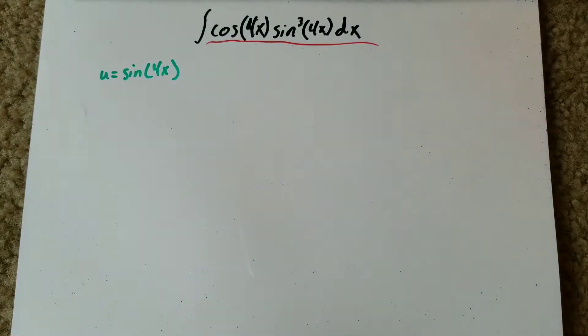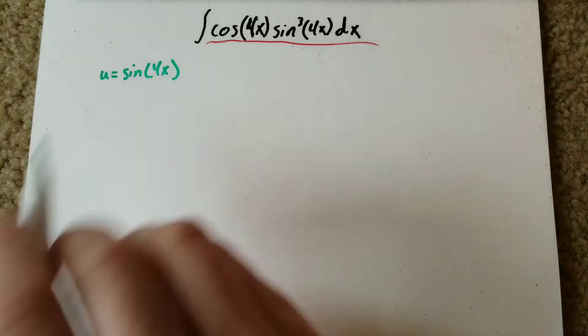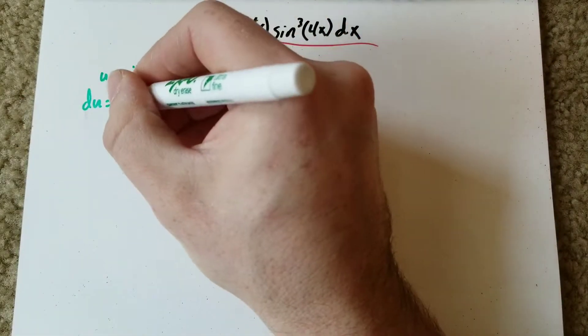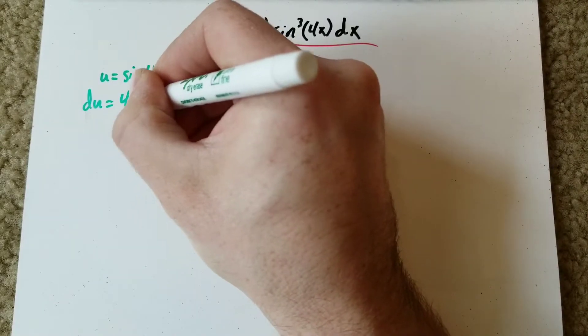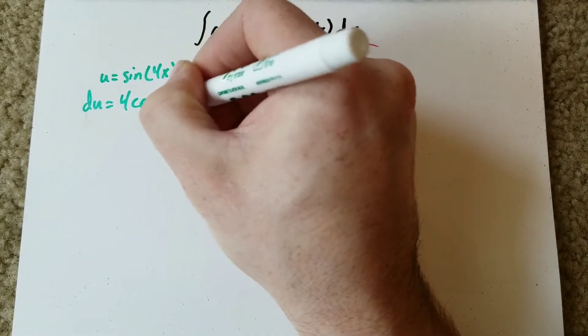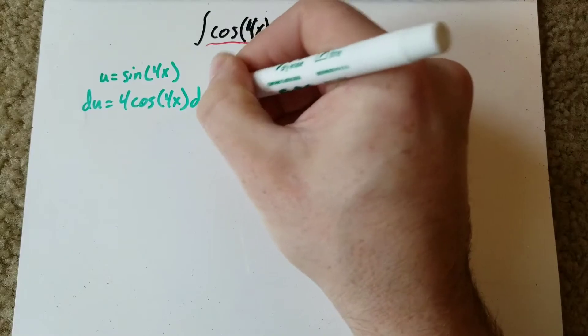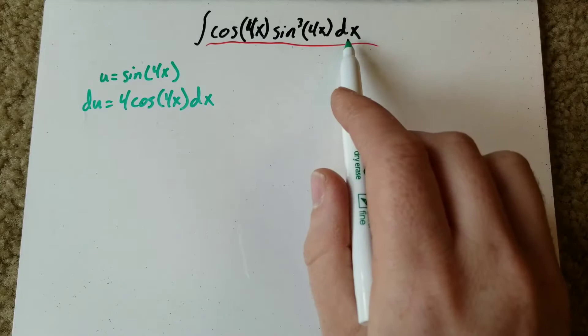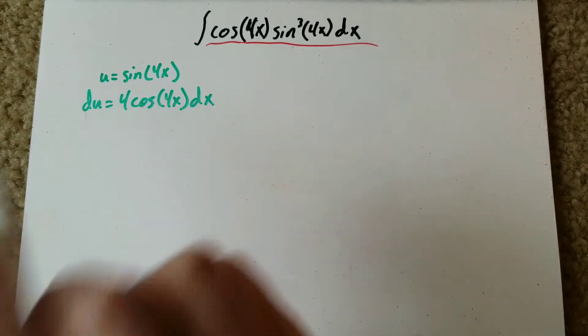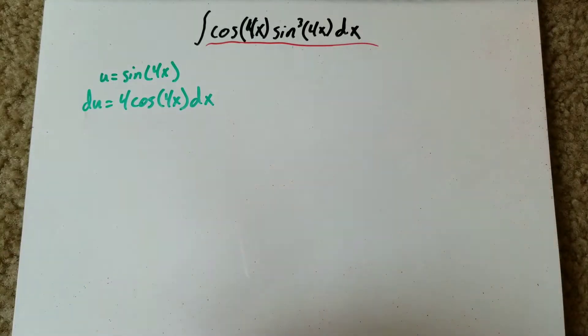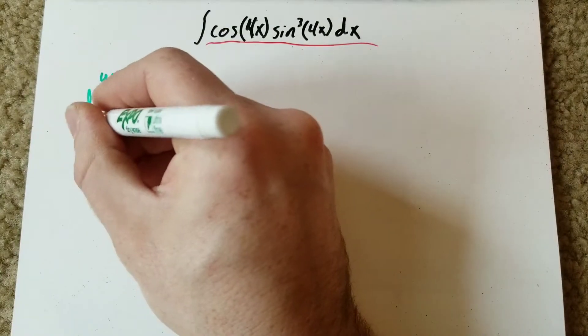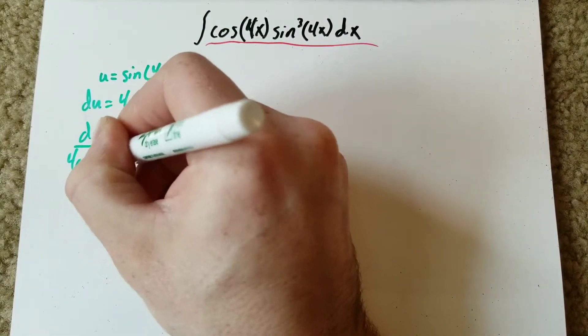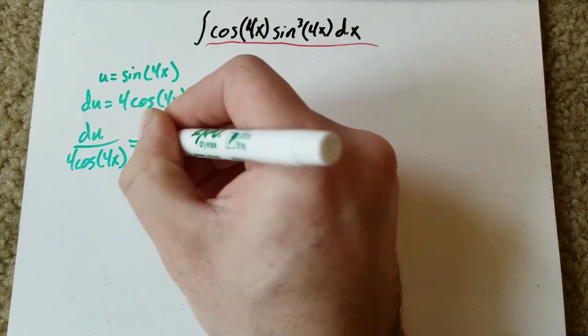And then we want to take the derivative of this, so we got du equals 4 cosine of 4x dx. And now we want to get dx by itself because dx in this is going to be replaced by du. So divide both sides, we end up with du over 4 cosine of 4x equals dx.